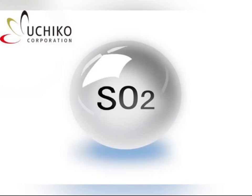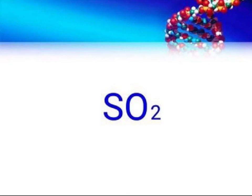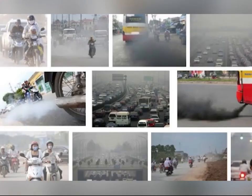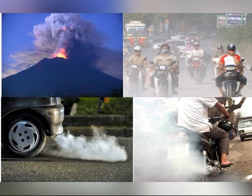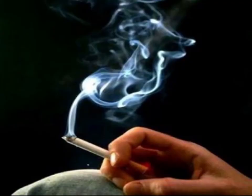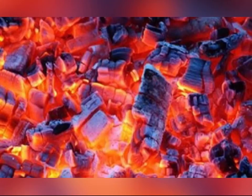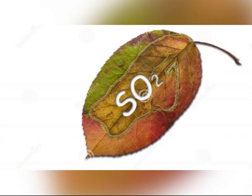Lưu huỳnh dioxit là một chất khí không màu, mùi hắc, độc, gây ho, viêm đường hô hấp. Lưu huỳnh dioxit là khí nặng hơn không khí bởi vì phân tử khối của SO₂ là 64, còn không khí là 29. Nguồn gốc hình thành: trong tự nhiên, lưu huỳnh dioxit thoát ra từ vụ núi lửa phun trào, các hợp chất sinh học có chứa lưu huỳnh phân hủy tạo ra lưu huỳnh dioxit. Trong công nghiệp, lưu huỳnh dioxit là khí thải từ các nhà máy lọc dầu, đốt than, luyện kim, phương tiện giao thông.